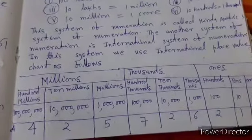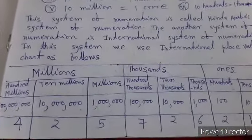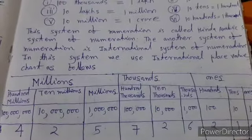As shown in the given chart, millions has 3 places: 100 million, 10 million and 1 million.